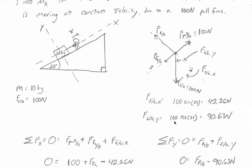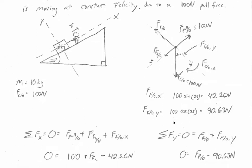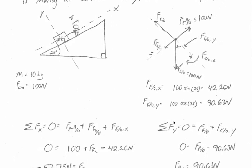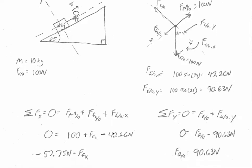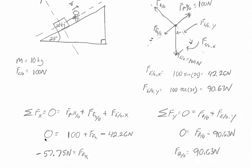So now we can set up our sum of the forces equations. We know that there's no acceleration so the forces must be balanced. The sum of the forces in the x direction is equal to zero, and we have three forces: the force of the pull on the object, the force of kinetic friction, and the force of the earth on the object in the x direction.